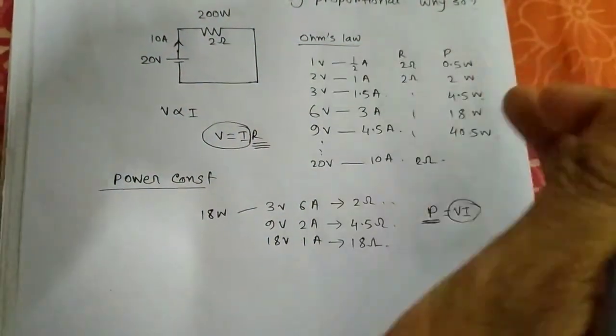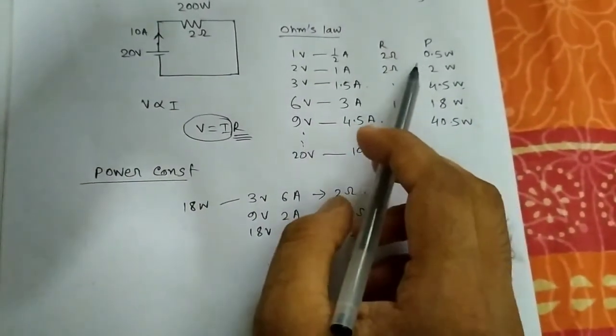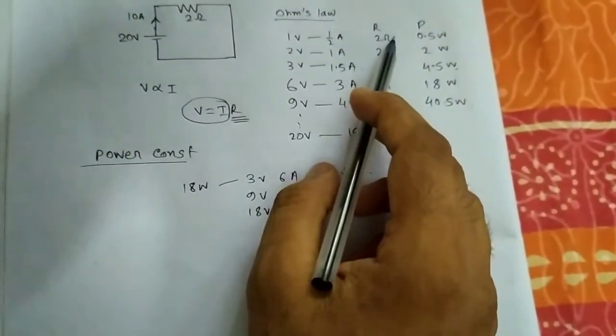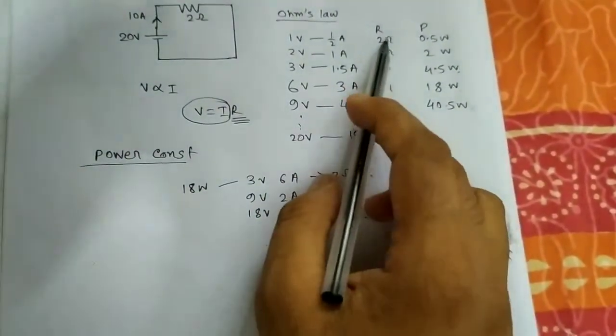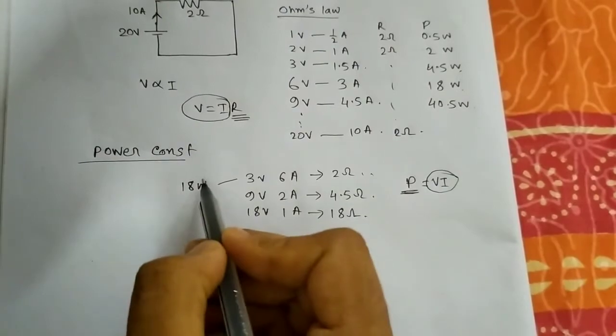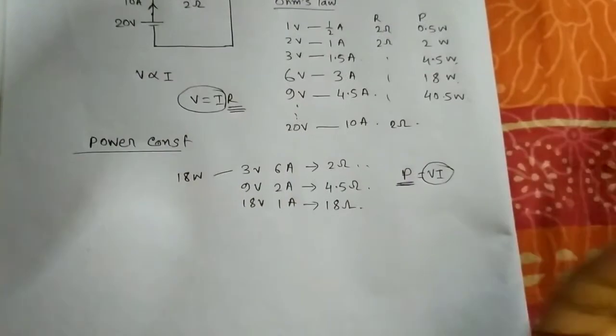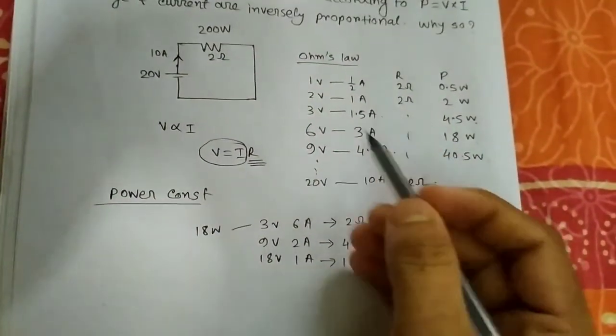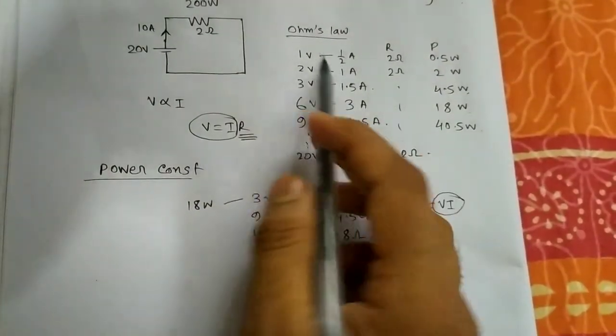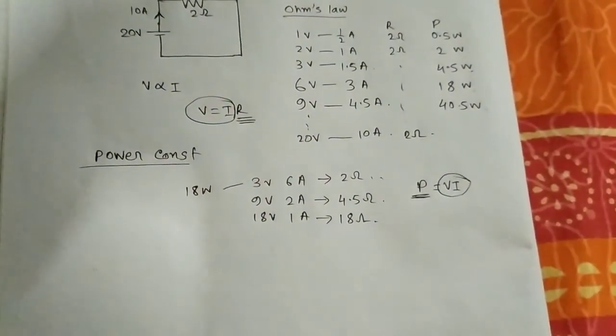When we talk about Ohm's Law, we don't consider the power. It doesn't matter what power it is going to dissipate. The only thing that matters is to keep the resistance constant. But in case of constant power, we make the power constant, not the resistance. Here the resistance is changing, so Ohm's Law is valid, but the scenario where V varies with I is not valid in this case. I hope you can understand.